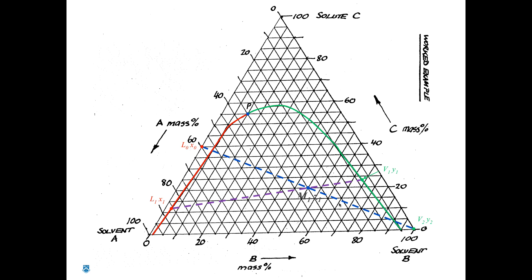We could then draw this point here, which is our solvent, and this point here, which is our feed — this is our mass balance line. With our value of Z1, we could find the tie line that passes through Z1, and that gave us our compositions of the extract and the raffinate leaving stage 1.